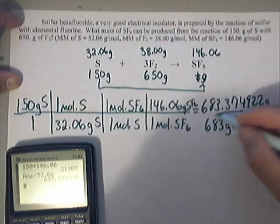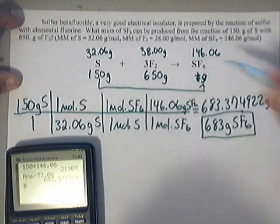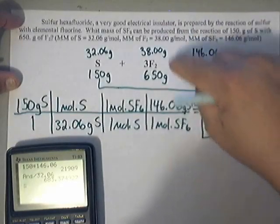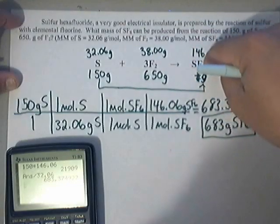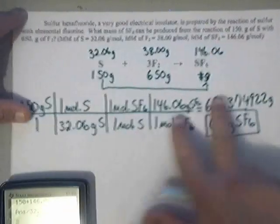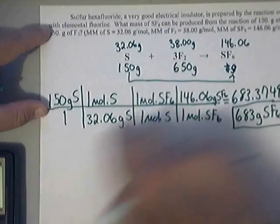Now this is one of our possible answers. Now what we need to do next is go from grams of the F2 to grams of the SF6. Then pick the smaller one. Let's go ahead and set that one up.